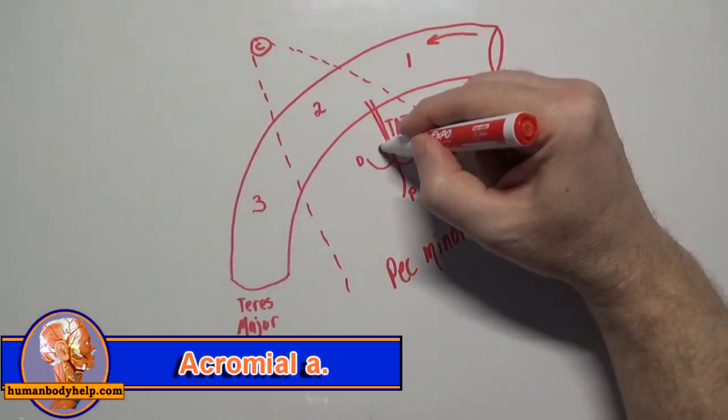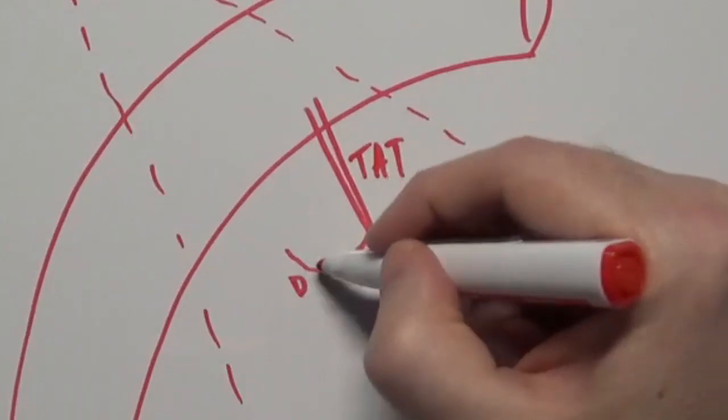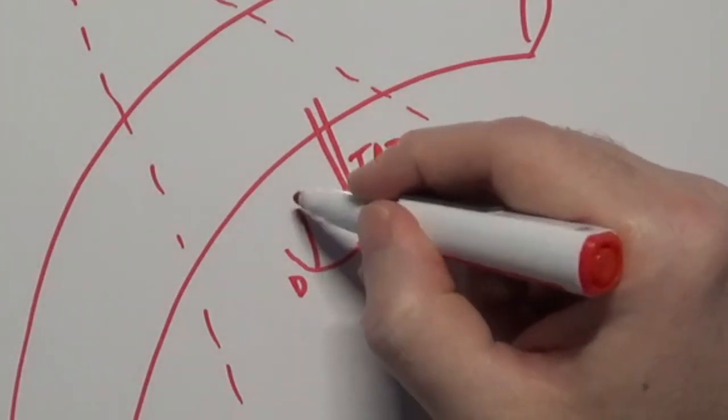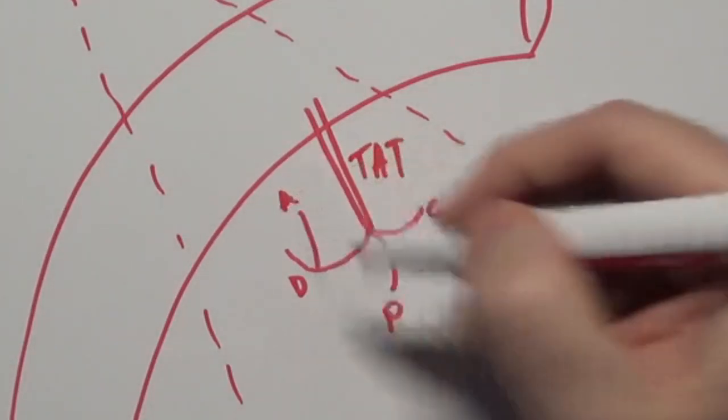And the acromial artery, which runs up toward the acromion process. Sometimes the acromial artery will branch off the deltoid artery, so watch out for that in your dissections.